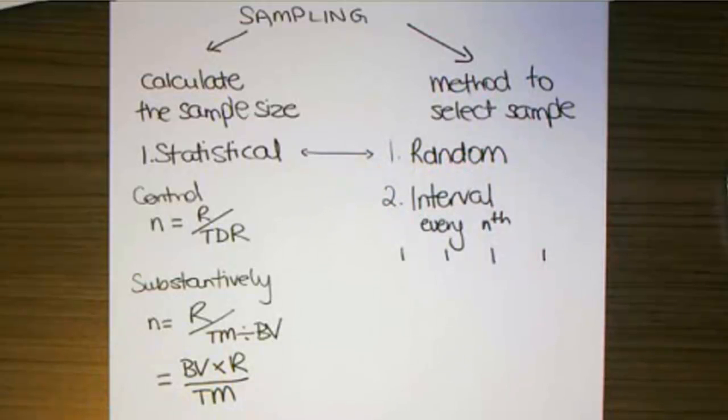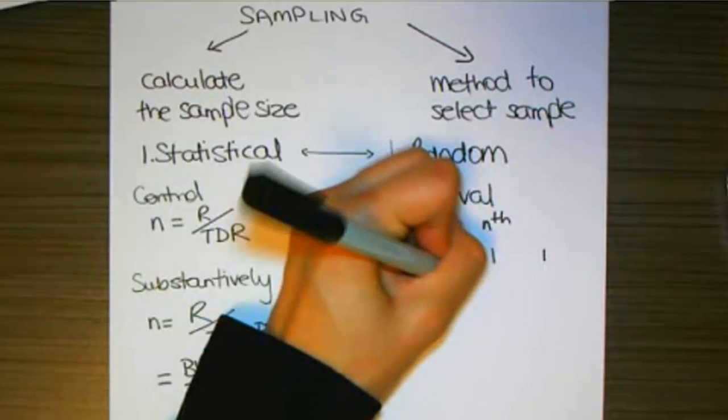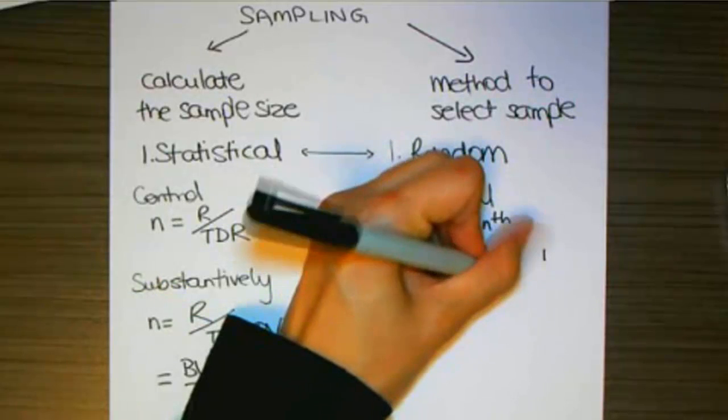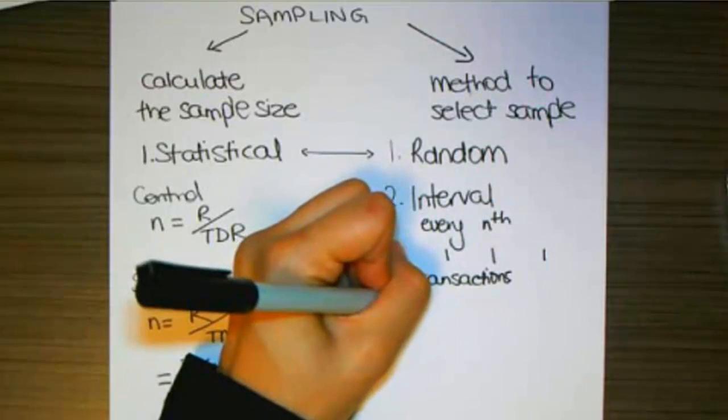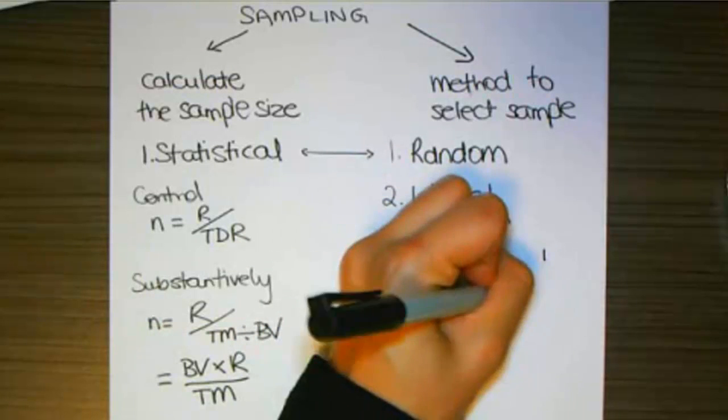Now that every nth might be based on individual transactions or it could be based on dollars in what is sometimes called dollar unit sampling.